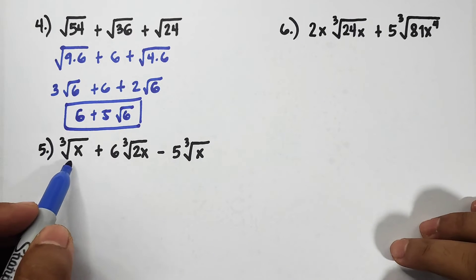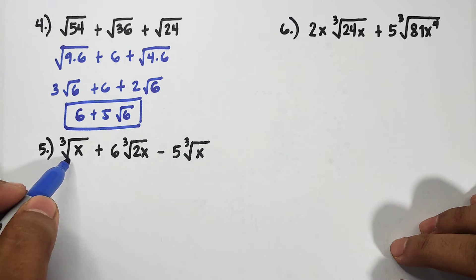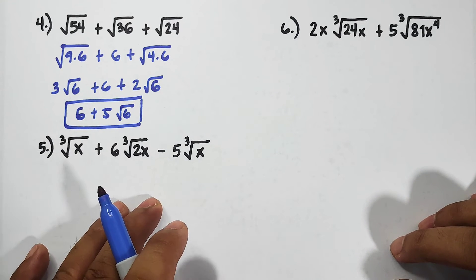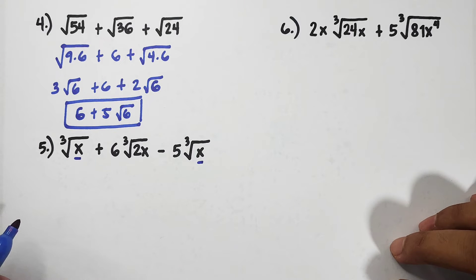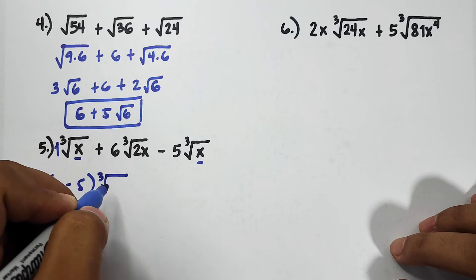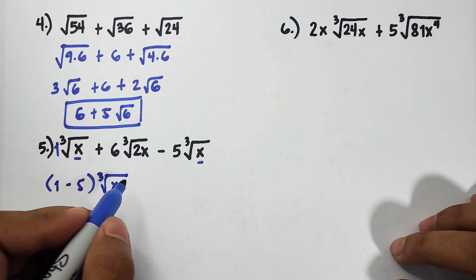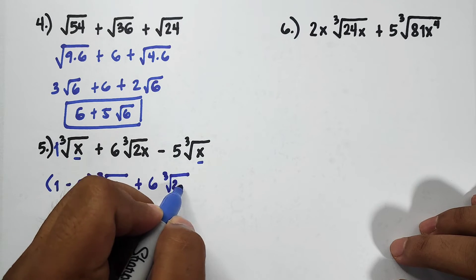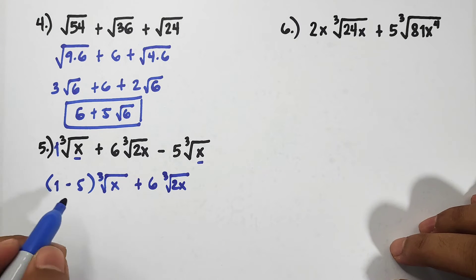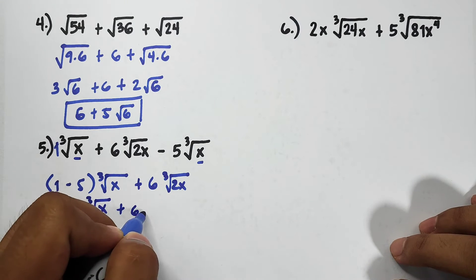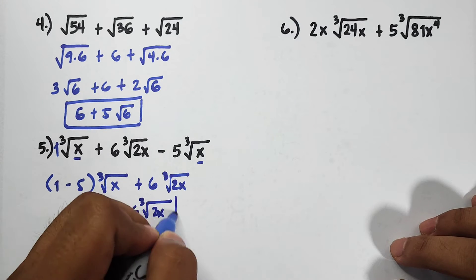For number 5, we have cube roots with variables: ∛x + 6∛(2x) − 5∛x. Not all are similar radicals — only ∛x appears twice. So we have the coefficient 1 minus 5 for the ∛x terms: 1 − 5 = −4. The 6∛(2x) has no similar radical, so we keep it separate. Final answer: −4∛x + 6∛(2x).